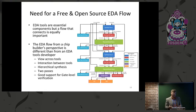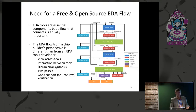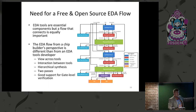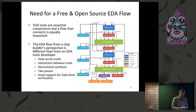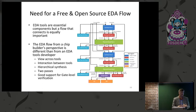To have a full open source chip CAD flow requires a lot. Looking at our commercial CAD flow and thinking about what's needed in the open source world: you need hierarchical synthesis, two-pass design, the ability to do engineering change orders, and good support for gate-level verification. These are things that a lot of the current open source tools don't support.